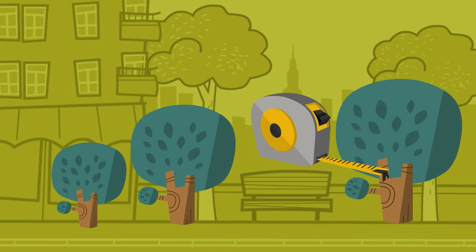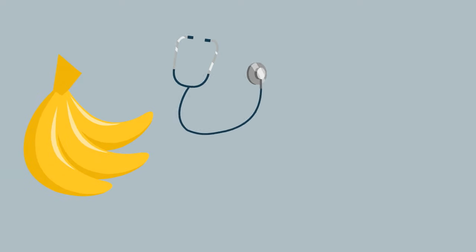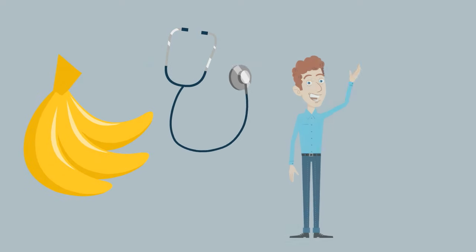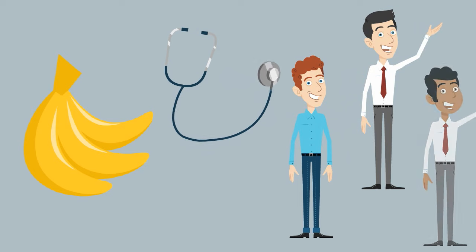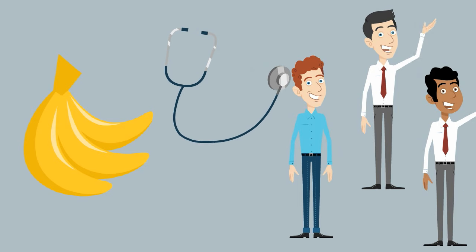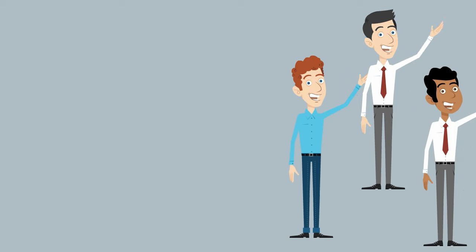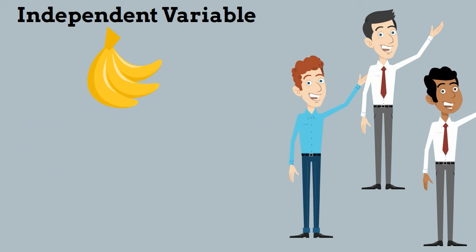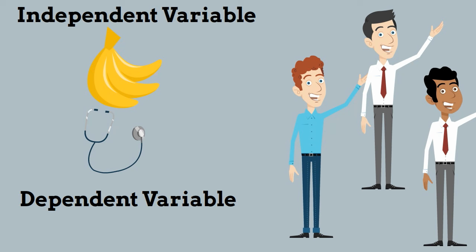Another example: eating five servings of bananas a week reduced the blood pressure of male patients. The number of bananas the men eat each week is your independent variable because it will change, and the blood pressure is the dependent variable and it is what you are measuring.